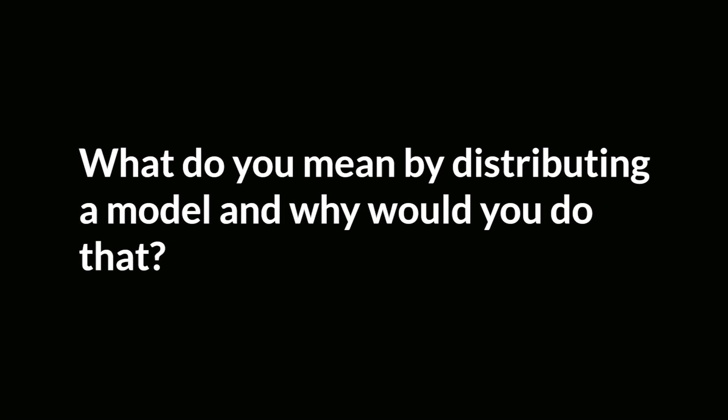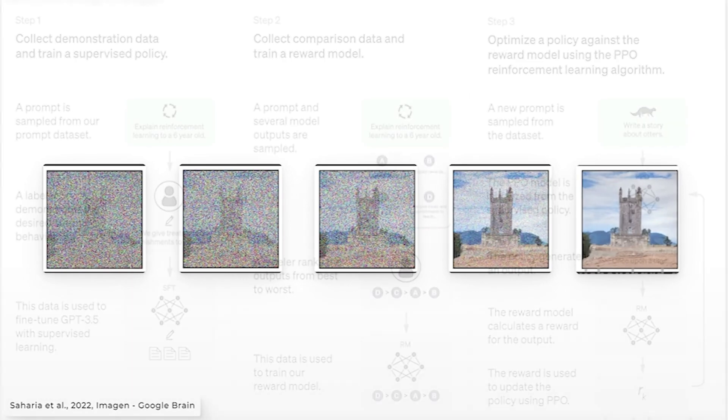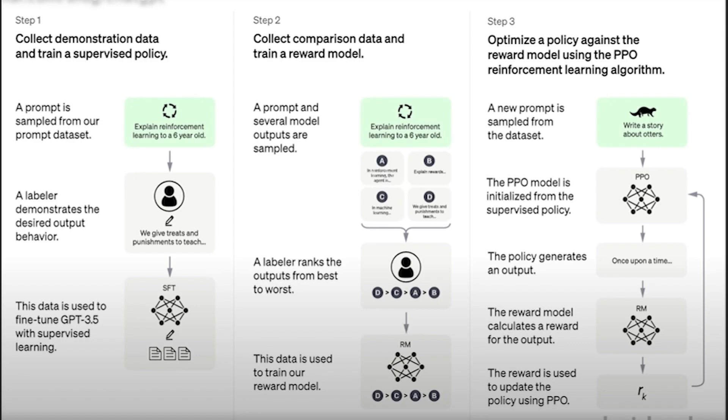What do you mean by distributing a model and why would you do that? You probably heard about those very large models, especially in the field of computer vision and natural language processing. We talk about stable diffusion models capable of generating very good images from text descriptions, or models like ChatGPT based on very large language models. Those models are really, really big — for instance, the GPT-3 model is a 175 billion parameter model.